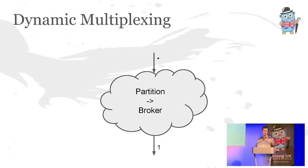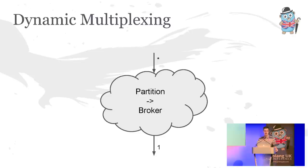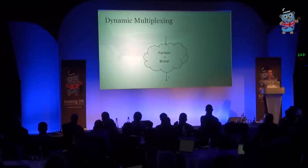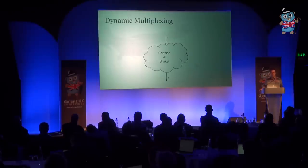Once a message has reached the partition goroutine, it then passes through a dynamic many-to-one mapping between partitions and brokers. Every partition in Kafka is led by one node in the cluster, and that mapping can change. A partition can be led by one broker, and then if that broker fails or the cluster rebalances, that partition can suddenly be led by an entirely different node. The simplest and safest way to handle this is to leave it entirely in the hands of each partition goroutine — make every one of them completely isolated, knowing exactly which broker they care about.